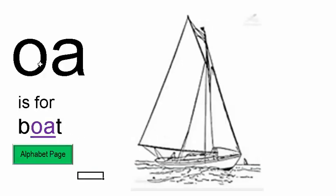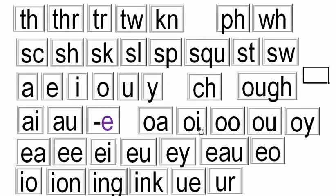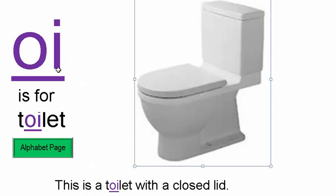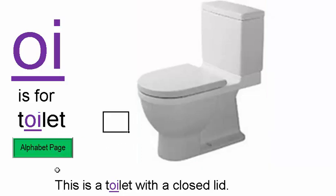OA makes the long O sound, as in BOAT. Here's a boat. OI is for the OY sound, as in TOILET. Here's a toilet with the lid closed.